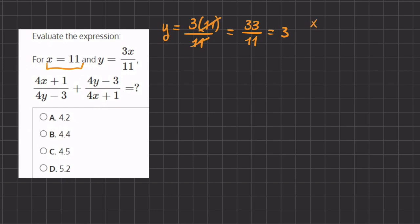Now if we have x equals 11 and y equals 3, let's plug that into our expression. So we have 4 times x, instead of x I'm going to write 11, plus 1, divided by 4 times y which is 3, minus 3, plus 4 times y which is 3, minus 3, divided by 4 times x which is 11, plus 1.